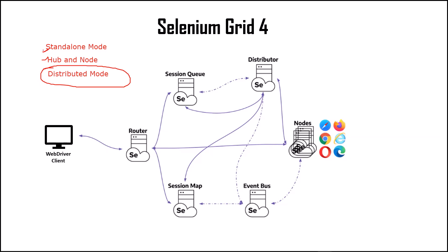In standalone mode it combines all the components of the grid into one, and we only need a single machine to set up the grid — it does not require any other machine. In hub and node, one machine acts as a hub and another one acts as a node. In this mode we can combine different machines together to create hub and nodes to set up a single grid. Links to those videos are available in the description.